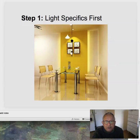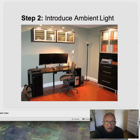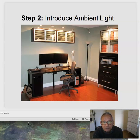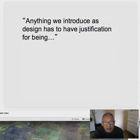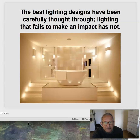So a couple of steps. From the Architecture of Light: you want to light specifics first, and then work your way out. Here we're lighting the artwork on the wall and the dining table. Then you probably want to introduce a little more ambient light — some task lighting and close-up light. Anything we introduce into a design has to have a justification; it can't be arbitrary. It's not just adding lighting to see — that's one task — but integrating it as part of the design. The best lighting designs are very well thought out. Lighting that fails to make an impact does not.